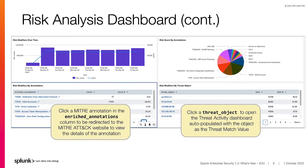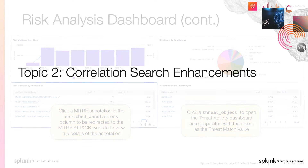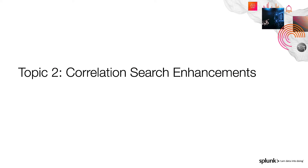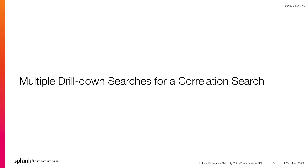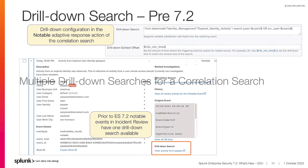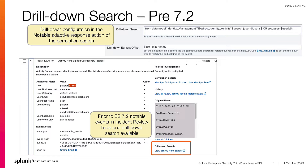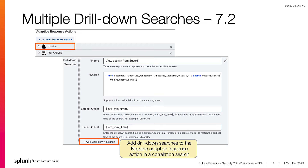Our second topic is correlation search enhancements. Let's take a look at the new feature to add multiple drill-down searches to a notable via a correlation search. Prior to ES 7.2, the notable adaptive response action allowed the configuration of one drill-down search. The drill-down search is available in the notable events on the bottom right of the notable details. With ES 7.2, you can add multiple drill-down searches to the notable adaptive response action in a correlation search. Select plus add drill-down search to add a search. This allows an analyst to quickly narrow the investigation originating from a notable event, eliminating the need to manually create queries, saving time and increasing efficiency.